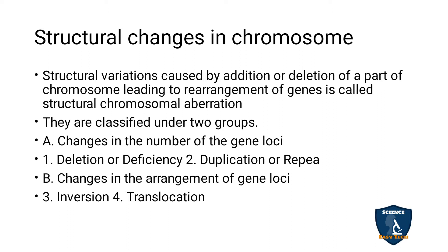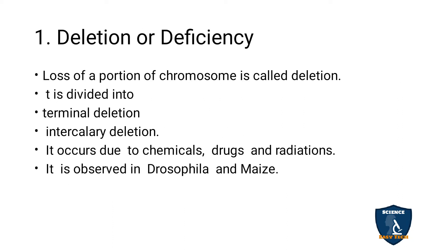The first type involves changes in the number of gene loci: deletion or deficiency, and duplication or repeat. The second type involves changes in the arrangement of gene loci: inversion and translocation.